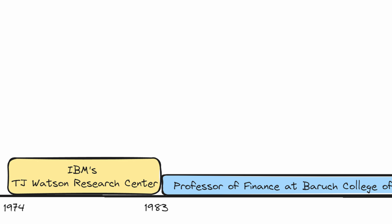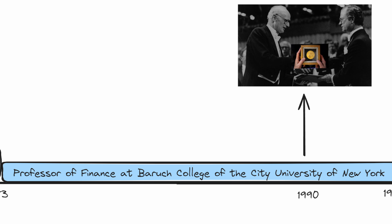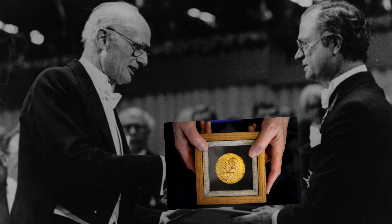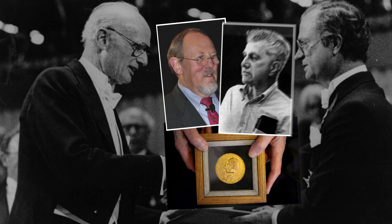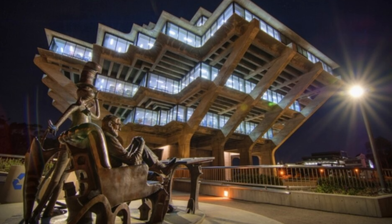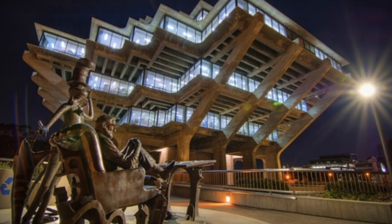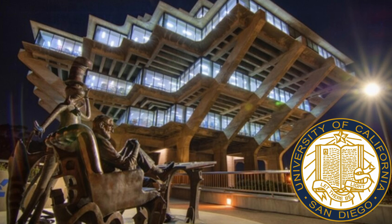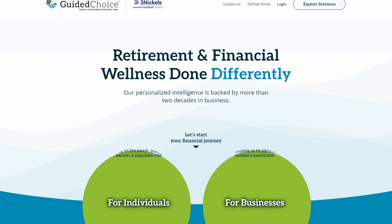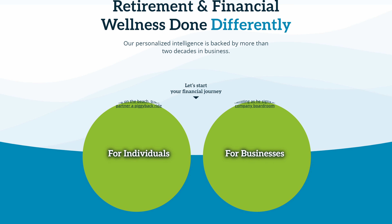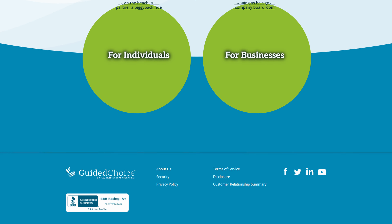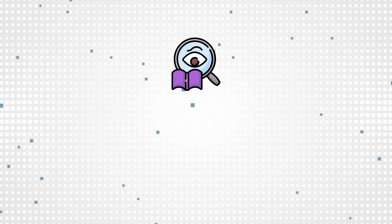Fast forward to 1990, Markowitz won the Nobel Prize in economic sciences with William Sharpe and Merton Miller. In the later years of his career, besides his role as a professor at the Rady School of Management at the University of California at San Diego, Markowitz became co-founder and chief architect of GuidedChoice, a San Diego-based financial advisor firm where he chairs the investment committee.